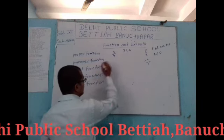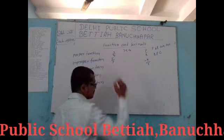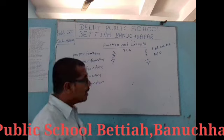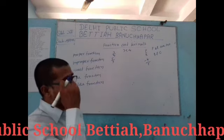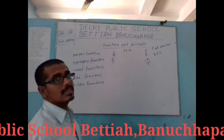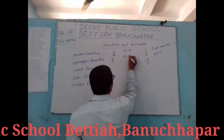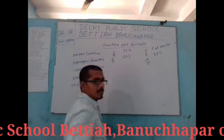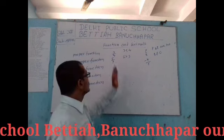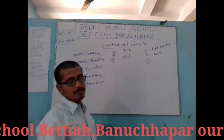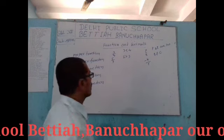Next is improper fraction. For example, 5 by 3. In such a fraction where the numerator is greater than the denominator — here 5 is greater than 3 — such a fraction is called an improper fraction.